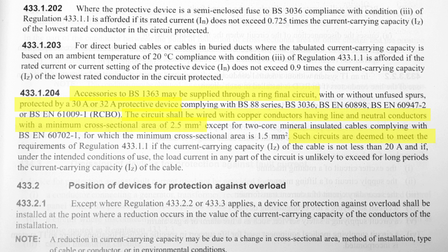Such circuits are deemed to meet the requirements of Regulation 433.1.1 if the current carrying capacity of the cable is not less than 20 amps and if, under the intended conditions of use, the load current in any part of the circuit is unlikely to exceed for long periods the current carrying capacity of the cable.